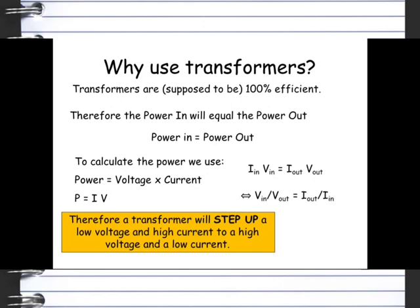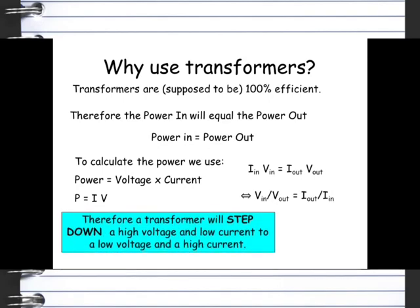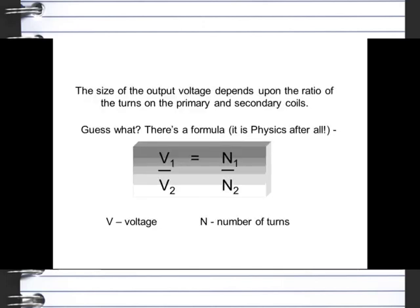So a step-up transformer will have a low voltage and a high current, and it will step up to a high voltage and a low current. And then a step-down will do the reverse, so a high voltage and a low current to a low voltage and a high current. The number of coils and the voltage can be worked out using this formula here. So the voltage on the primary coil, the first coil, divided by the voltage on the secondary coil, can equal the number of turns, or the number of coils, in the first coil, divided by the number of coils in the secondary.